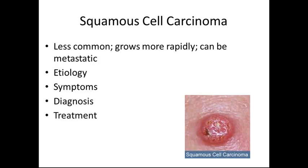Squamous cell carcinomas are less common, grow more rapidly, and can be metastatic. The etiology involves sun-exposed skin. Symptoms are firm red nodules with crusts or slightly elevated plaques. Diagnosis is by biopsy, and treatment is surgical excision with some radiation. An example of squamous cell carcinoma is shown in the lower right-hand corner.